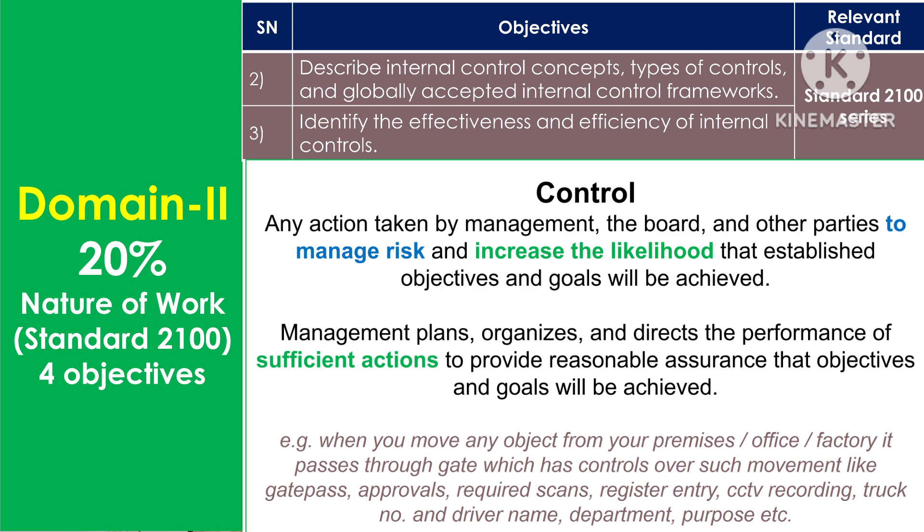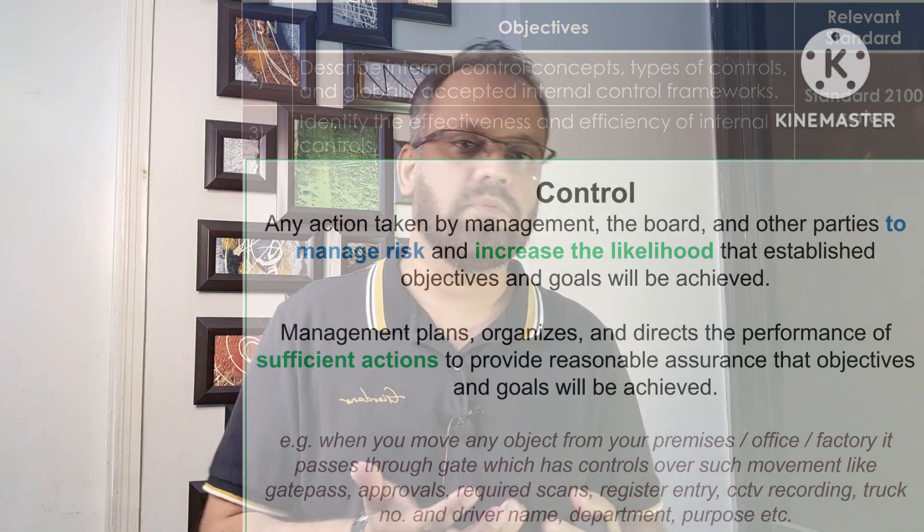This movement needs approvals. A gate pass must be created by someone, reviewed by someone, and approved by someone. It requires scans or register entries. There is CCTV recording at the gate. The truck number, driver number, and vehicle details are recorded, along with the department representative's name and purpose of movement. These are all called controls for moving any object from one premises to another.